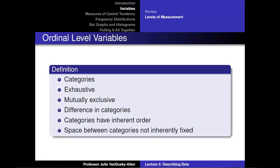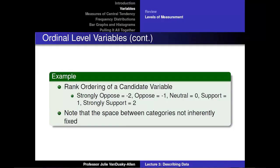Ordinal-level variables also divide subjects into exhaustive and mutually exclusive categories, but with inherent order. For example, many surveys ask respondents about the extent to which they support a candidate, using rank-ordered categories: strongly oppose (−2), oppose (−1), neutral (0), support (1), and strongly support (2). The least support has the lowest value and support increases as values go up. However, the spaces between categories are not inherently fixed — a respondent might feel there is a huge difference between strongly opposed and opposed, but a small difference between opposed and neutral.